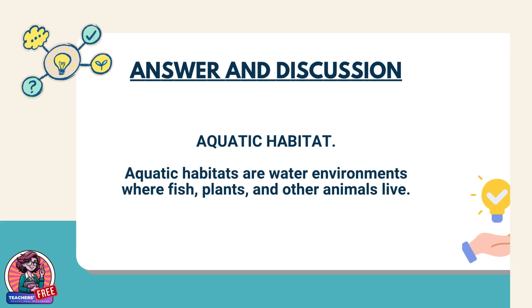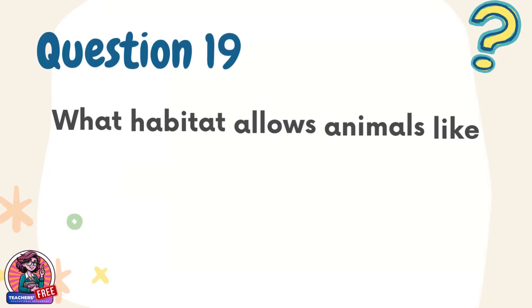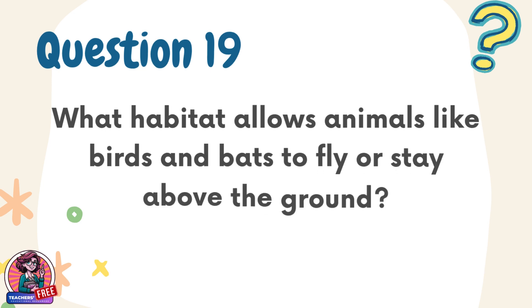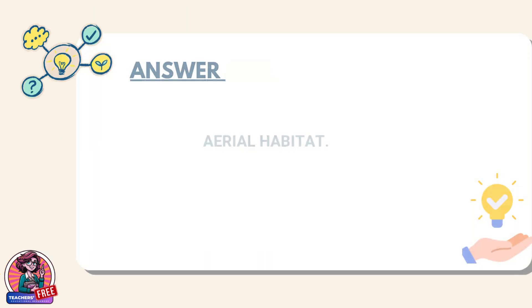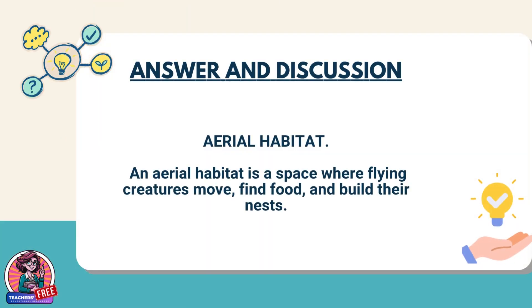Question 19. What habitat allows animals like birds and bats to fly or stay above the ground? Answer: Aerial habitat. An aerial habitat is a space where flying creatures move, find food, and build their nests.